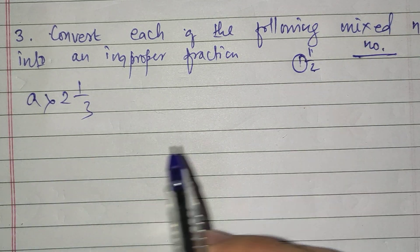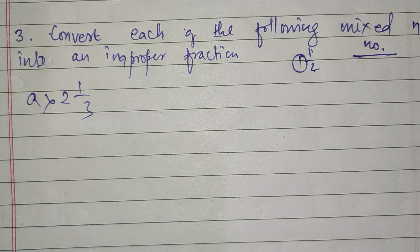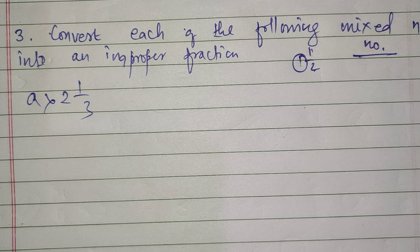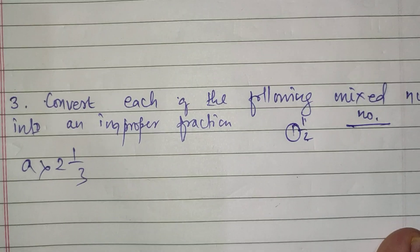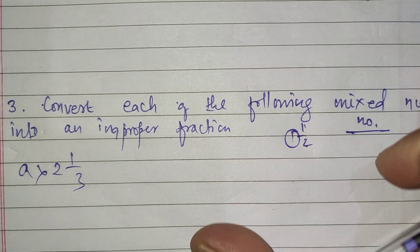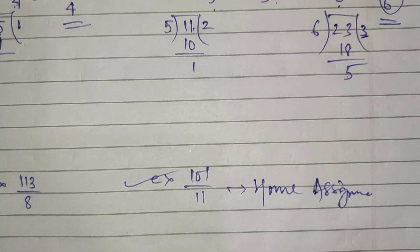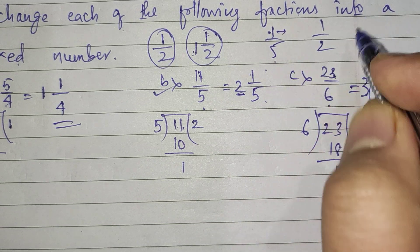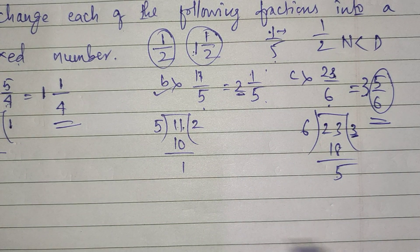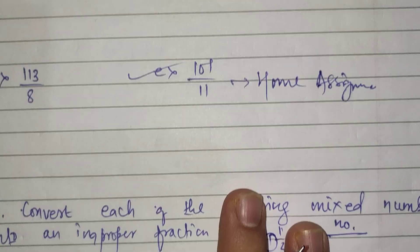And what is an improper fraction? In our previous question I told you: a proper fraction is one in which the numerator is always less than the denominator. So I'm writing it down in case you have a doubt.